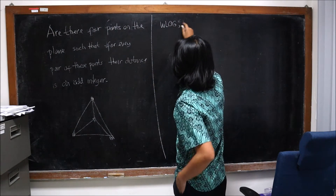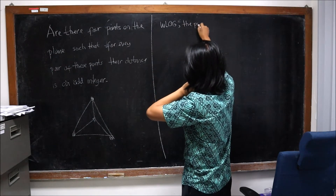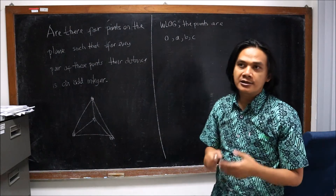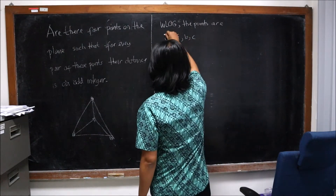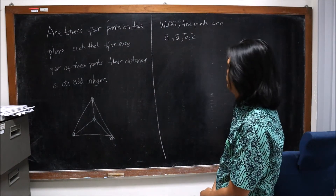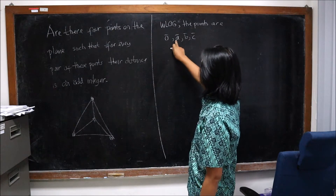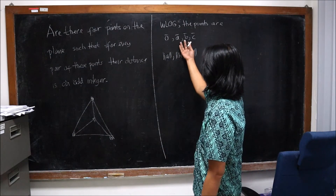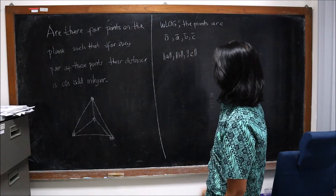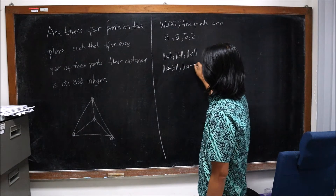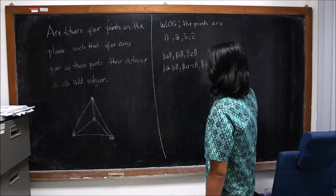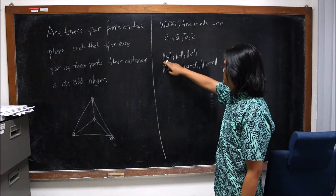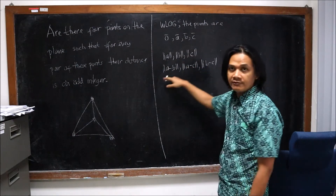So without loss of generality, the four points are the origin 0, and vectors A, B, C. We can consider them to be vectors. The condition says that the distances from the origin to A, B, C are the lengths |A|, |B|, |C|, and the distances between the non-zero vectors are |A - B|, |A - C|, and |B - C|. We assume all six of these lengths are odd integers.